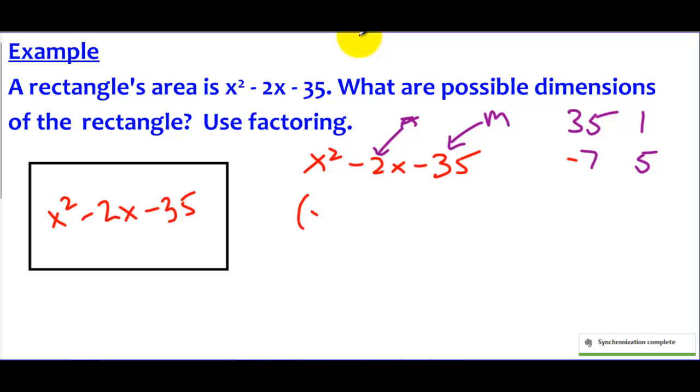So I'm going to break this up into x minus 7 and x plus 5, and I'm going to say that x minus 7 could be a length that could go up here, and x plus 5 could be a width, and that could go right there. And these are interchangeable if you switch them and put x plus 5 on top and x minus 7 on the side. That's the same thing. We're just saying that this is a possible set of factors of this area, which means that the dimensions could be x minus 7 and x plus 5.